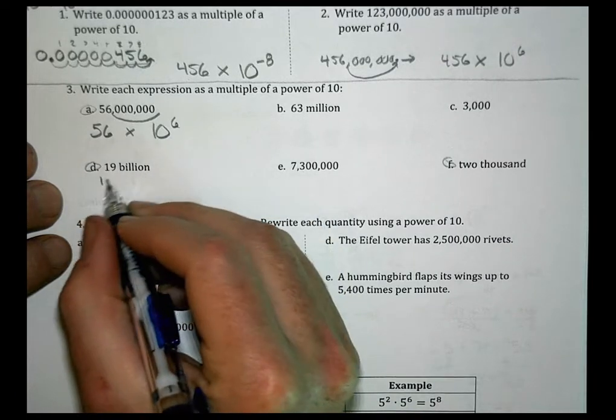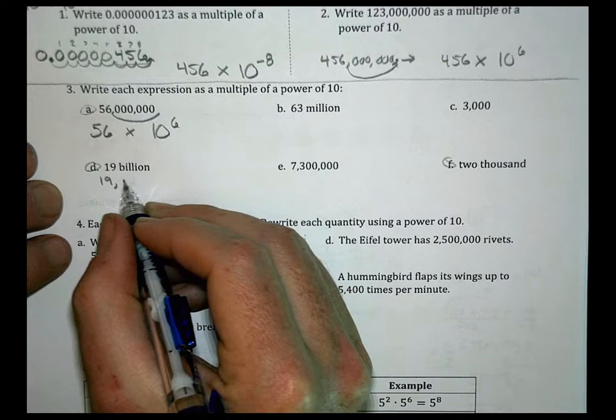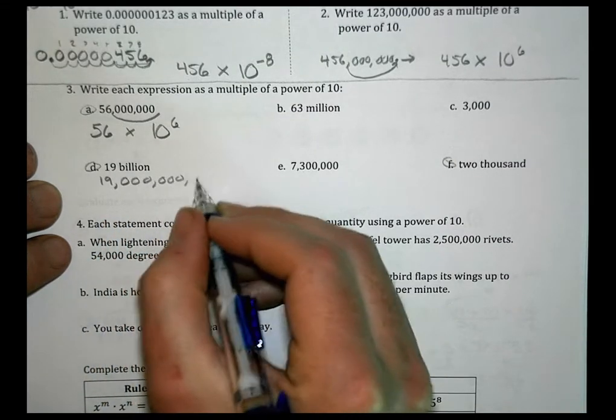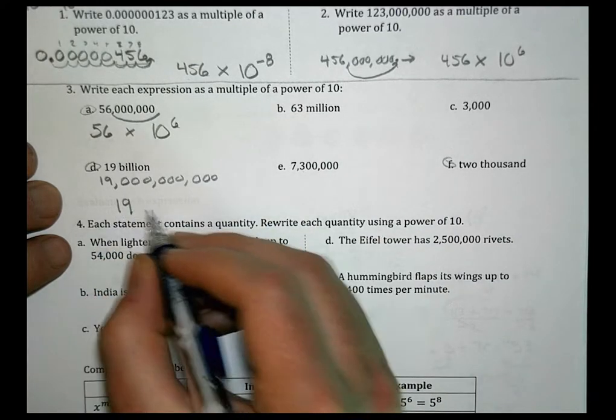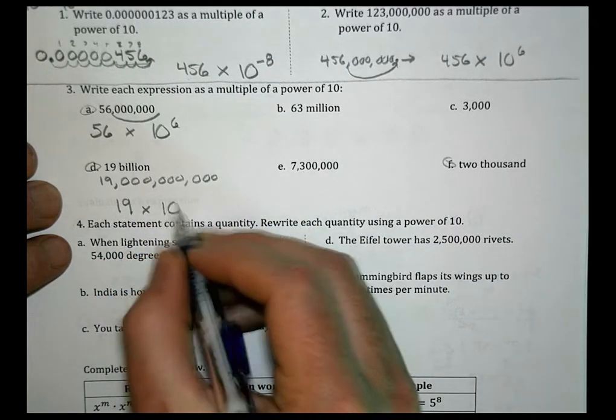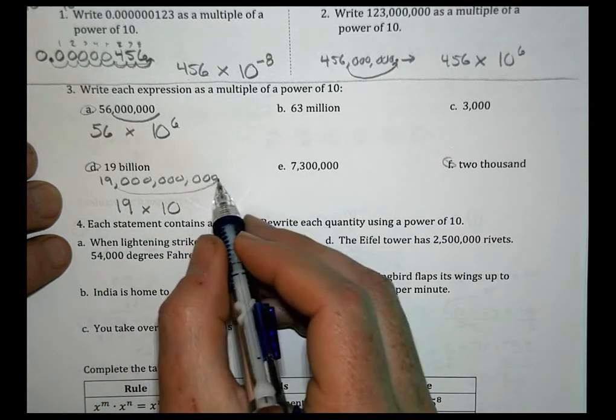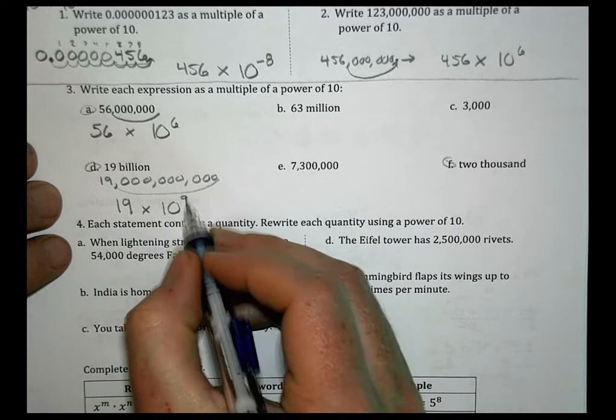19 billion. I'm not sure what that is always, so maybe write it out. 19 billion, there's 19, and then the millions places, the 1,000 places, 100s, 10s, and 1s. So we have 19 multiplied by 10 to how many spaces? That's 1, 2, 3, 4, 5, 6, 7, 8, 9.